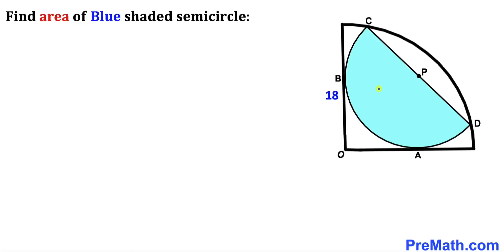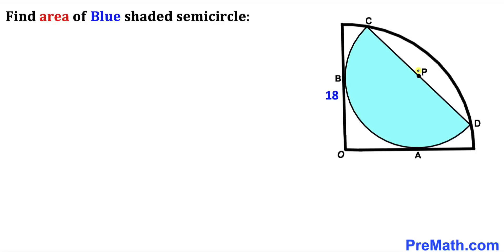Welcome to pre-math. In this video we have a blue semicircle inscribed in a quarter circle, such that the radius of the quarter circle is 18 units. The center of the semicircle is P, while the center of the quarter circle is O. We are going to calculate the area of this blue shaded semicircle.